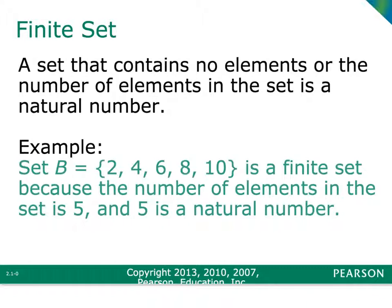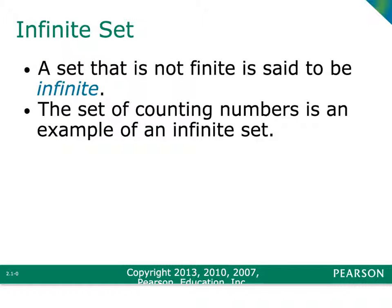Everything we've worked with so far has been what's called a finite set. A finite set is just a set that has an ending — it's a countable set. For example, {2, 4, 6, 8, 10} — you can count how many elements there are; this one has 5 elements. If the set goes on and on forever, it is called infinite. Infinite sets never end and are technically not countable because you would never get to the end of them. For example, the entire set of natural numbers would be an infinite set because it never stops.